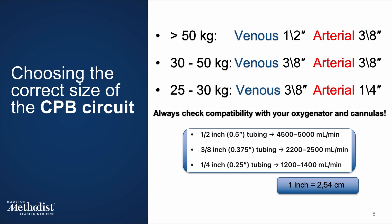The CPB circuit must handle the patient's circulatory volume while minimizing resistance and pressure loss. For adults, we typically use tubing sizes like 1/4 inch, 3/8 inch, or 1/2 inch, depending on the expected flow rates. For pediatrics, the tubing is smaller — 1/8 to 1/4 inch — to match their lower blood volume and avoid excessive resistance. Always check circuit compatibility: tubing, oxygenators, and cannulas all need to match up at all connections.